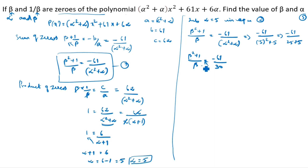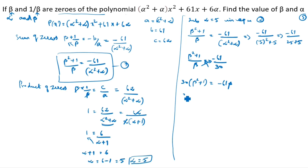Multiplying through by 30 beta: 30 beta squared plus 30 equals minus 61 beta. Rearranging: 30 beta squared plus 61 beta plus 30 equals 0.